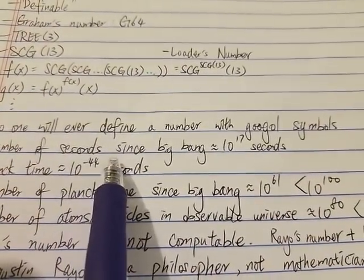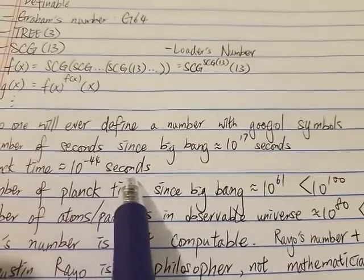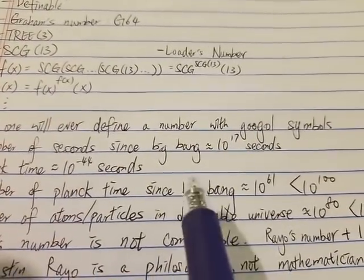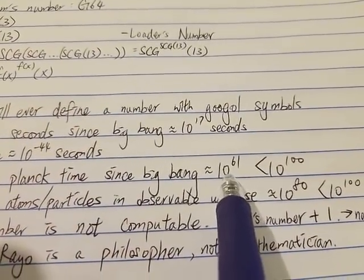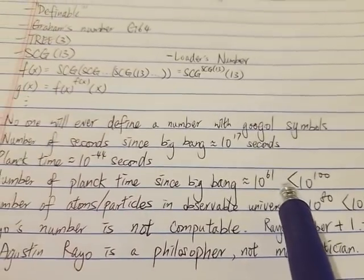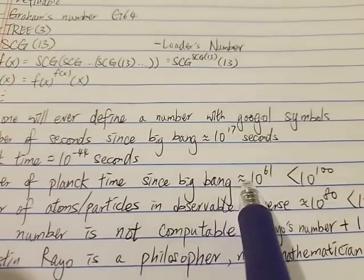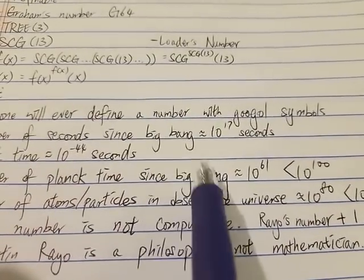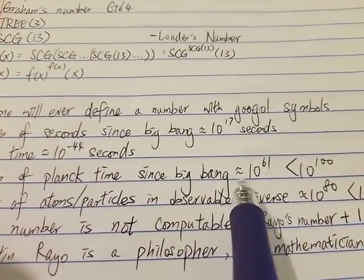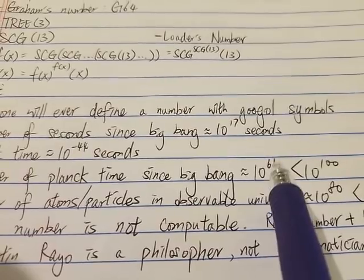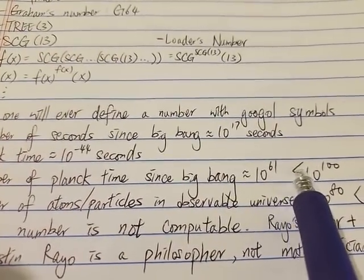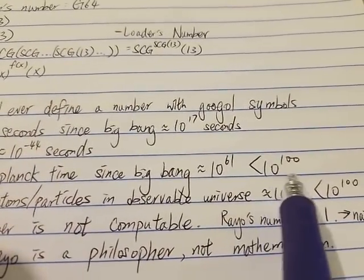Because there's 10^44 Planck time per second, which is equal to around 10^61 Planck time. So even if you can write one symbol per Planck time since the beginning of the Big Bang, until now you could only write about 10^61 symbols, which is way less than a googol.